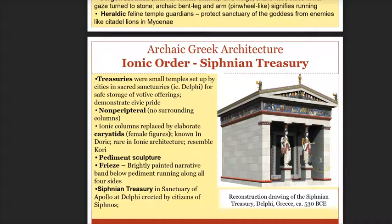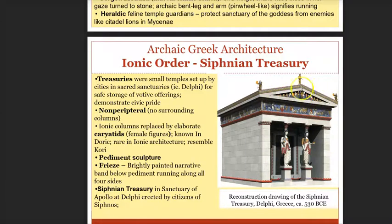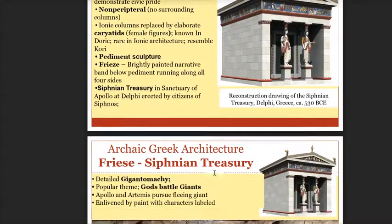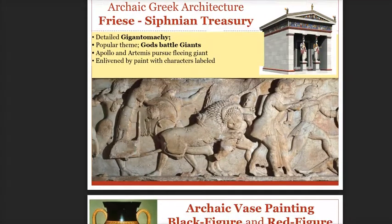This is an Ionic order temple. Some temples were called treasuries but were still dedicated to the gods. This is a non-peripteral temple — you can see the sides do not have columns; they're solid. Note that the columns holding up the porch are figures of women, called caryatids. It's still post and lintel construction. In the triangular pediment you would see stories of the life of the gods and battles of the gods, and around the frieze would be more stories of the gods.